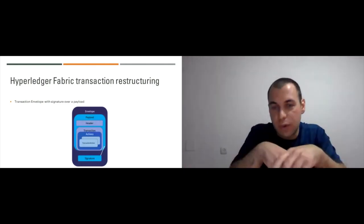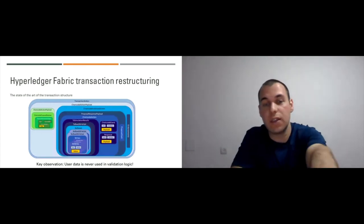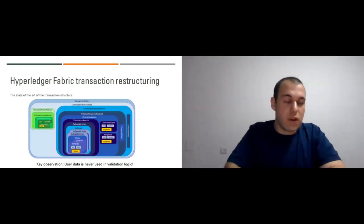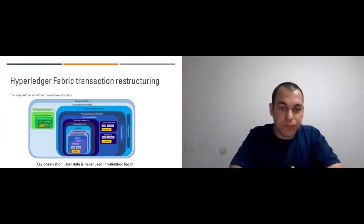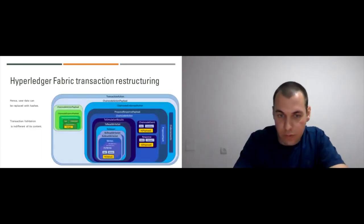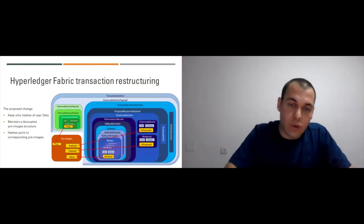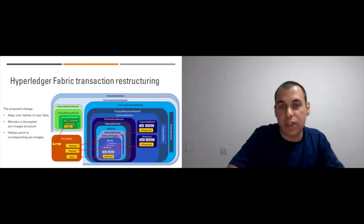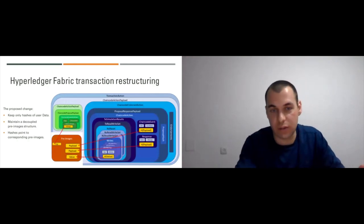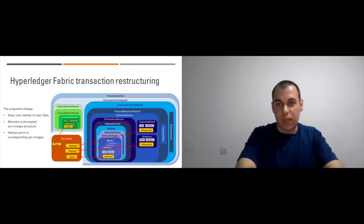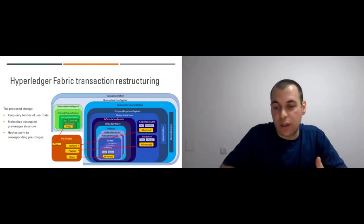If we dive deep into the transaction format, the most interesting fields are the values in the key-value pairs (shown in yellow). These are the fields we want to be able to redact. The approach is to replace these fields — instead of putting the actual value, we replace them with their hashes. We then allocate a new space in the transaction called a pre-image space, where we store all the pre-images.